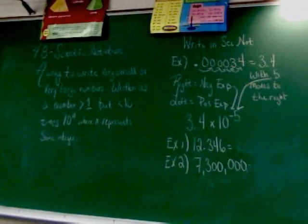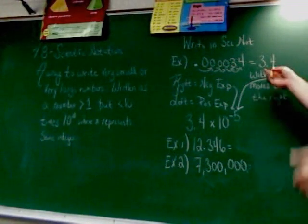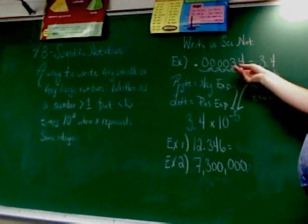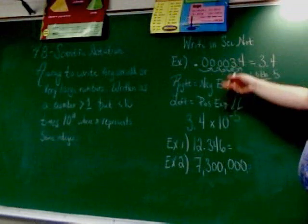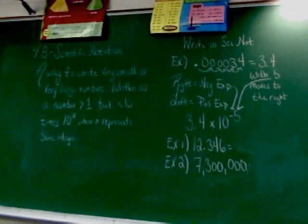Take and move the decimal so it's after the first number that's not a zero, which is why I changed it into 3.4. Three is the first number that's not zero, obviously, so I put the decimal right after.